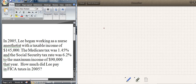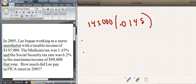How much did Lee pay in FICA taxes in 2005? Well, essentially we're going to first figure out the Medicare tax because there's no max on that one. So we're going to go $145,000 times 0.0145, plus—I'll write it down here.